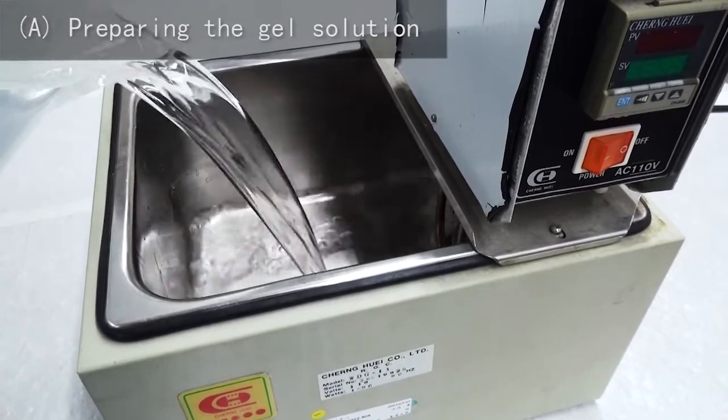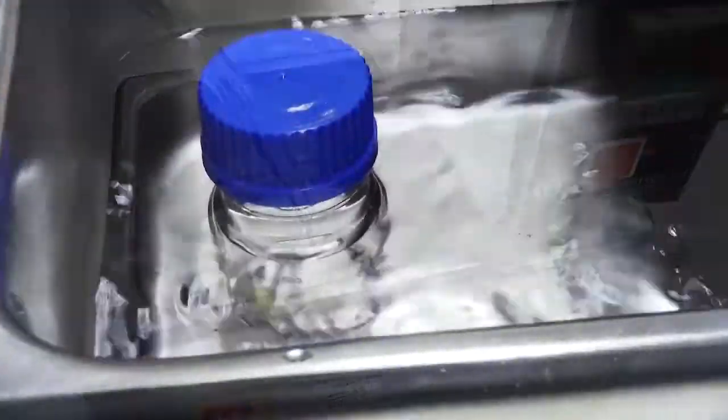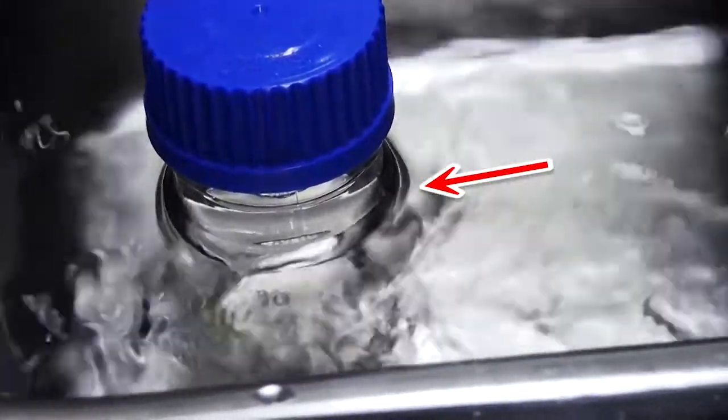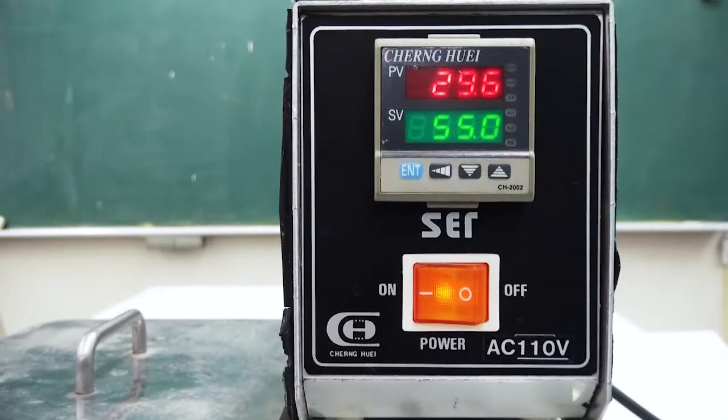First, switch on the water bath and add enough water so the water level will be higher than the gel solution level. Set the water bath temperature to 55 degrees Celsius.